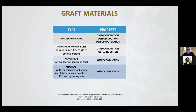The graft materials are divided in four types. We have autogenous bone, autograft human bone, xenograft and alloplast. The property of autogenous bone is osteoconduction, osteoinduction, and osteoproliferation. The xenograft and alloplast have only osteoconduction.